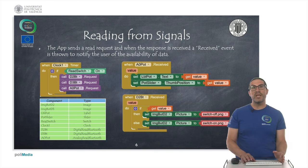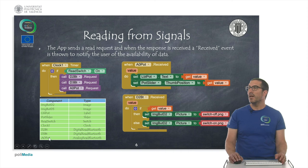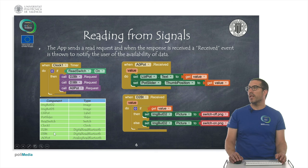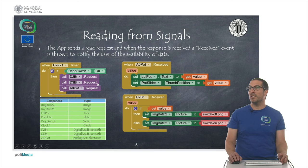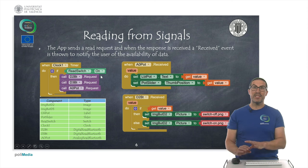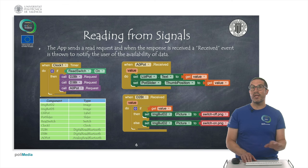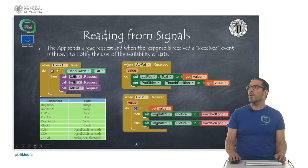Here is an example of how to read from signals. We are reading from an analog signal — in this case a potentiometer — using an analog read Bluetooth component. We also have a digital read signal component. A clock is used so that once the timer is triggered, we request the value for these signals. That sends a telegram to the electronics, and the electronics automatically send back the value. Once the value is received, the user of the app is notified in this piece of code — or for the digital read, in this piece of code.